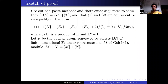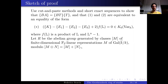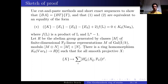To show this quantity is non-zero, we construct a ring homomorphism from K0 Var to another ring R — the free abelian group generated by isomorphism classes of finite-dimensional F2-linear representations of the Galois group of k, modulo direct sums (not short exact sequences). The tensor product makes R into a ring.